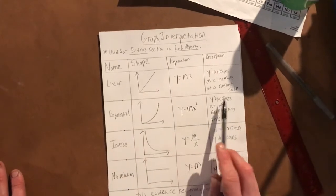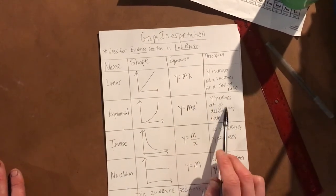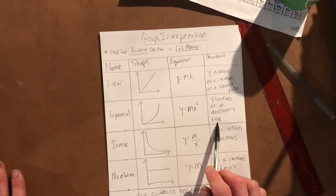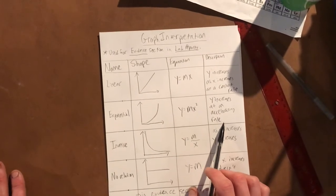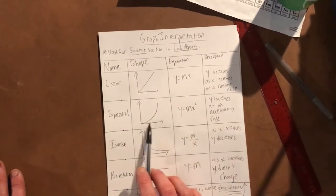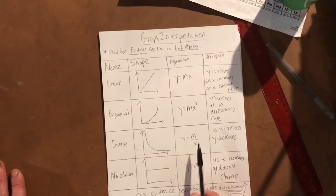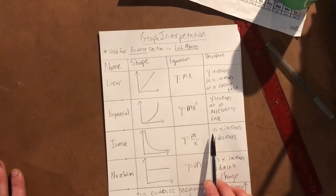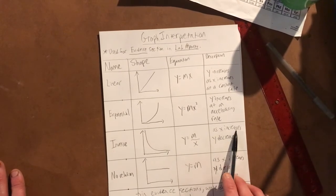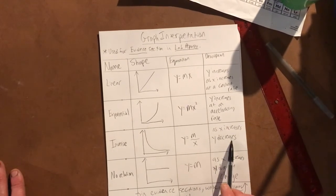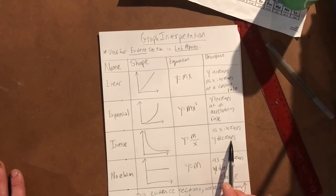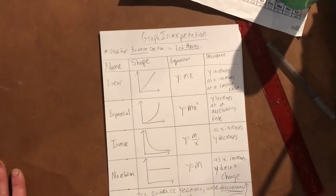If it was like accelerating like this, we're gonna say 'distance increases at an accelerating rate' in our evidence section. We know that we're gonna say that because it was an exponential graph in our evidence section in our labs from now on. Or if it was inverse, we'll say 'as time increases, distance decreases' instead of x and y.